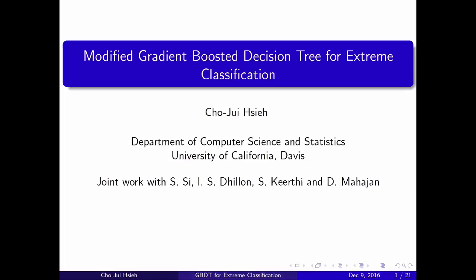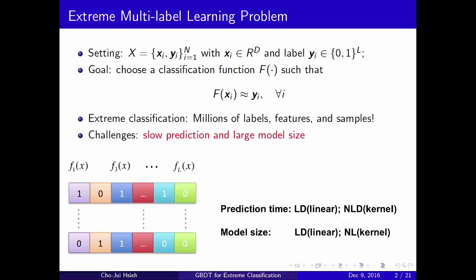In extreme classification, we've already seen a lot of talks in this workshop. So here we define some notations for my talk. We assume we are given training data xi and yi, where xi is a d-dimensional feature vector and yi is an l-dimensional label vector. The label vector can be a 0-1 l-dimensional vector. Our goal is to learn the best function f of x such that f of xi approximately equals yi for each training data.